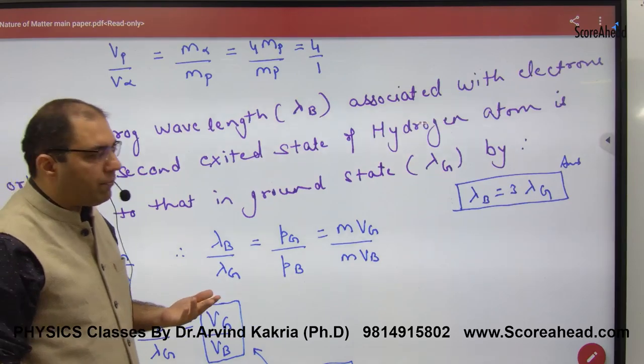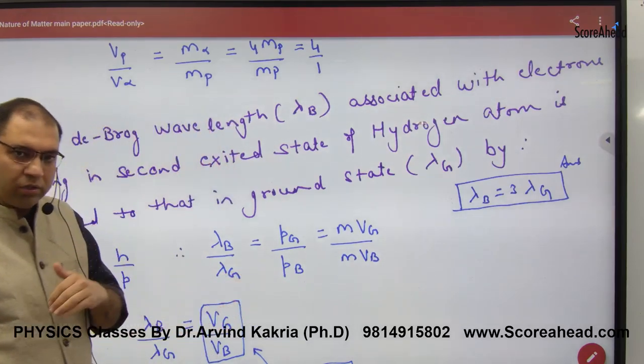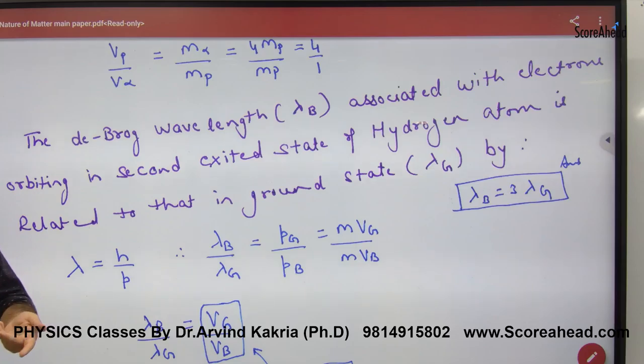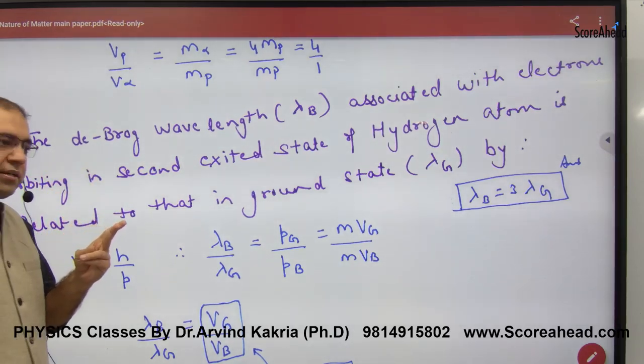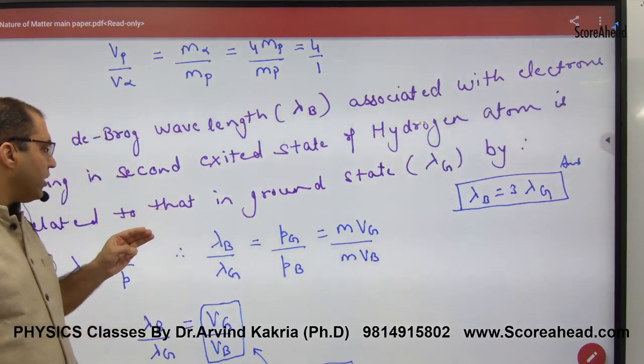The de Broglie's wavelength, lambda B, associated with electron orbiting in second excited state of hydrogen atom. Second excited state means n equals 3.